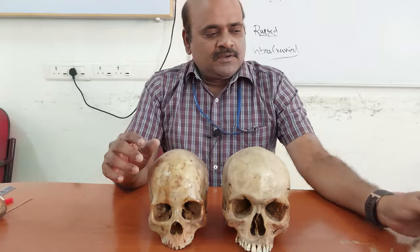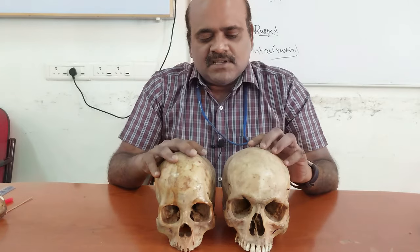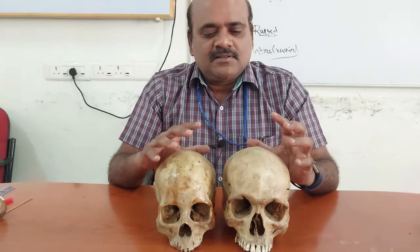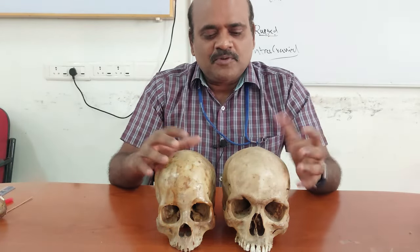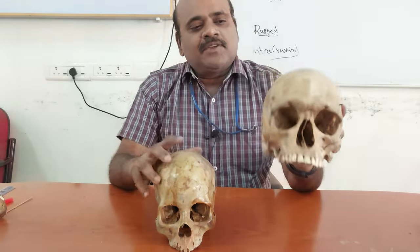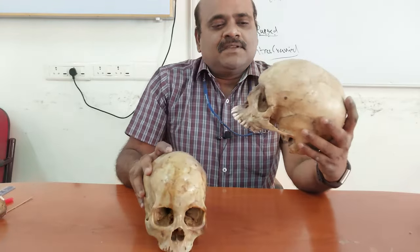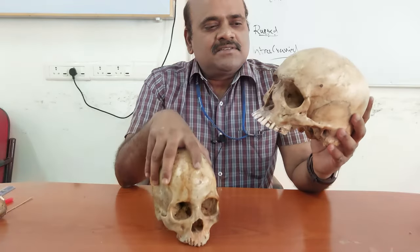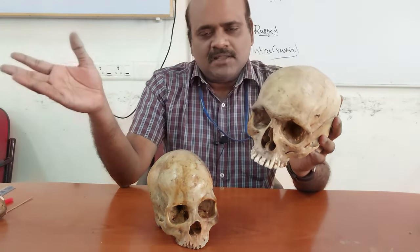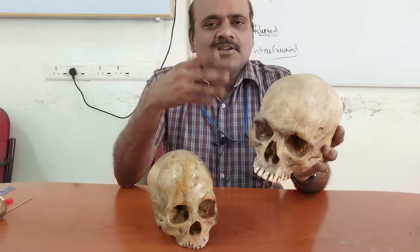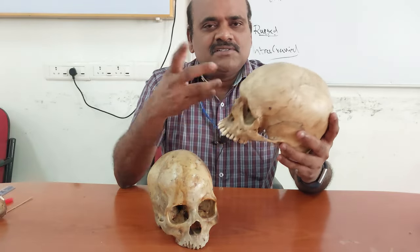Now let us move on to sexual differences in the skull. The sexual differences in the skull are mostly non-metric, so we have to rely mostly on morphological features which are subjective. The skull on the left is the male skull; the one on the right is the female skull. Generally the male skull is relatively larger, heavier and massive — this applies to other bones as well, such as the femur and pelvis, because male bones are bigger in size with higher bone density.